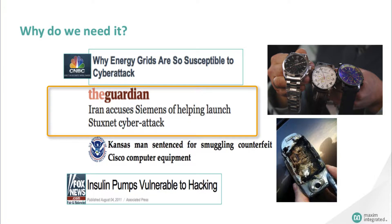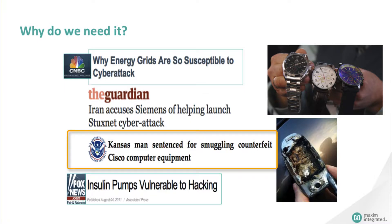A second worm called Flame, trolling through Iranian computers, sent back critical information on military and scientific secrets. A worm similar to Flame could be embedded into Chinese counterfeit routers, allowing these routers to transmit military and scientific secrets if installed in government offices. More and more products include wireless interfaces and controls, making them also vulnerable to hacking.